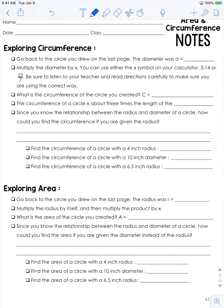So let's explore circumference. We're going to go back to the circle that I drew and the diameter was three inches. So you can either put your own diameter in here or you can just use mine. So you're gonna multiply the diameter by pi.